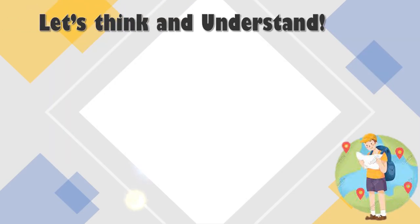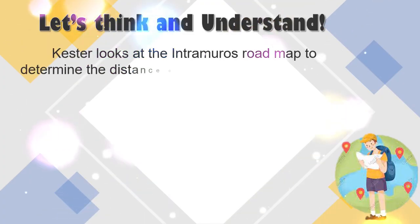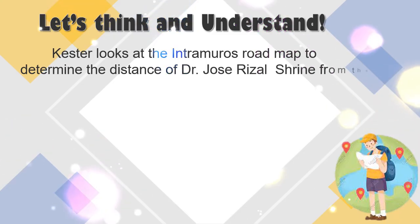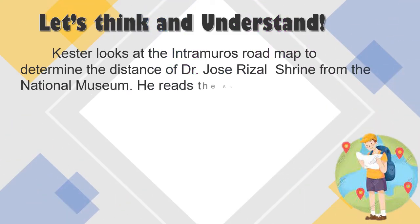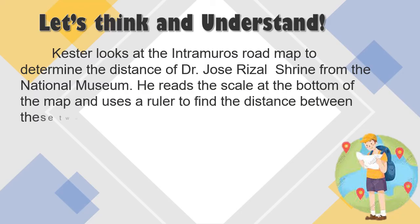Let's think and understand. Kester looks at the Intramuros roadmap to determine the distance of Dr. Jose Rizal Shrine from the National Museum. He reads the scale at the bottom of the map and uses a ruler to find the distance between these two locations on the map.